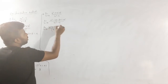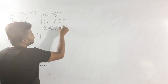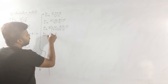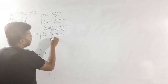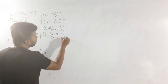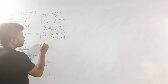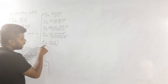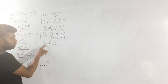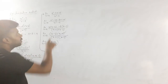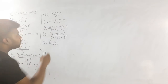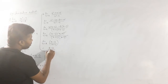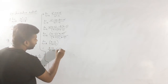For the numerator x squared minus 5x plus 6, x minus 3 is a common factor, giving (x minus 3)(x minus 2). So the limit x tends to 2 of (x minus 3)(x minus 2) divided by (x plus 2)(x minus 2) — cancel (x minus 2) — becomes limit x tends to 2 of (x minus 3) divided by (x plus 2). Substituting x equals 2: (2 minus 3) divided by (2 plus 2) equals minus 1 by 4.